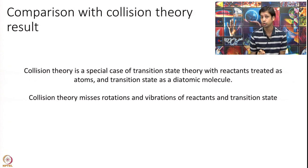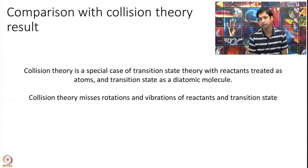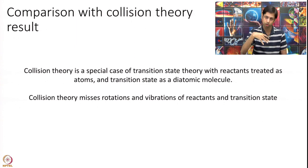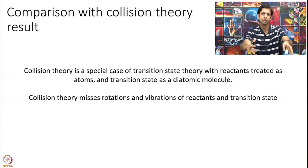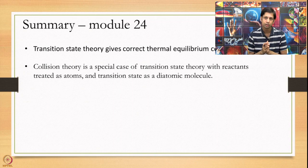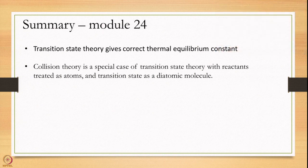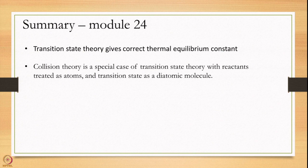So in effect, collision theory is really missing all rotations and vibrations of my reactants and transition state. That is what Transition State Theory is doing — looking deeper into the structure of reactants and the transition state and adding the appropriate amount of vibrations and rotations to get a better rate. In summary today we discussed two points: the equilibrium constant derived from Transition State Theory is consistent with thermodynamics, and collision theory is a special case of Transition State Theory applied to two atoms colliding to give a linear transition state. Thank you very much.